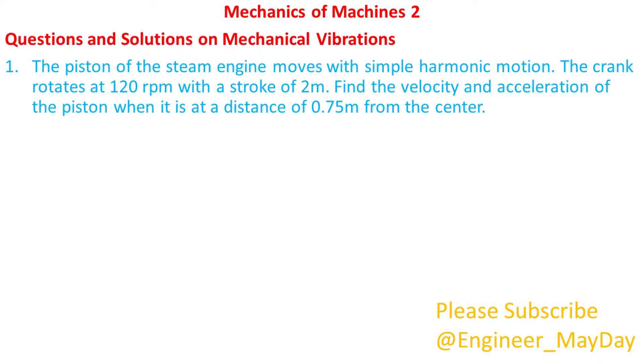The piston of the steam engine moves with simple harmonic motion. The crank rotates at 120 RPM with a stroke of 2 meters. Find the velocity and acceleration of the piston when it is at a distance of 0.75 meters from the center.